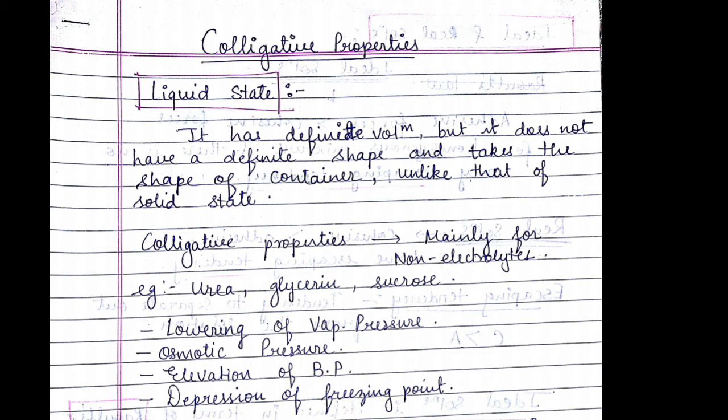The colligative properties are lowering of vapor pressure, osmotic pressure, elevation of boiling point, and depression of freezing point. These are mainly shown by non-electrolytes. Examples are urea, glycerin, and sucrose.